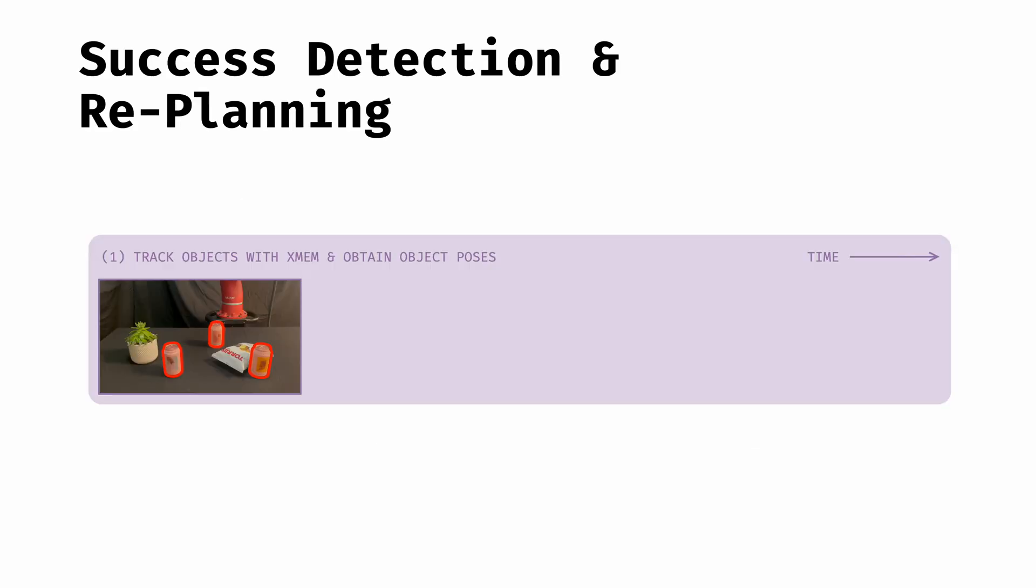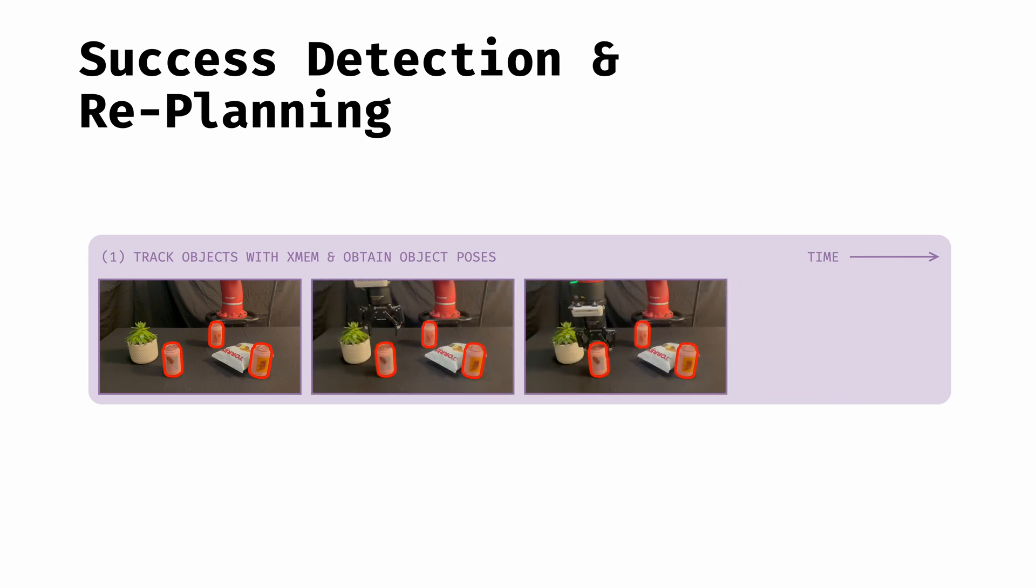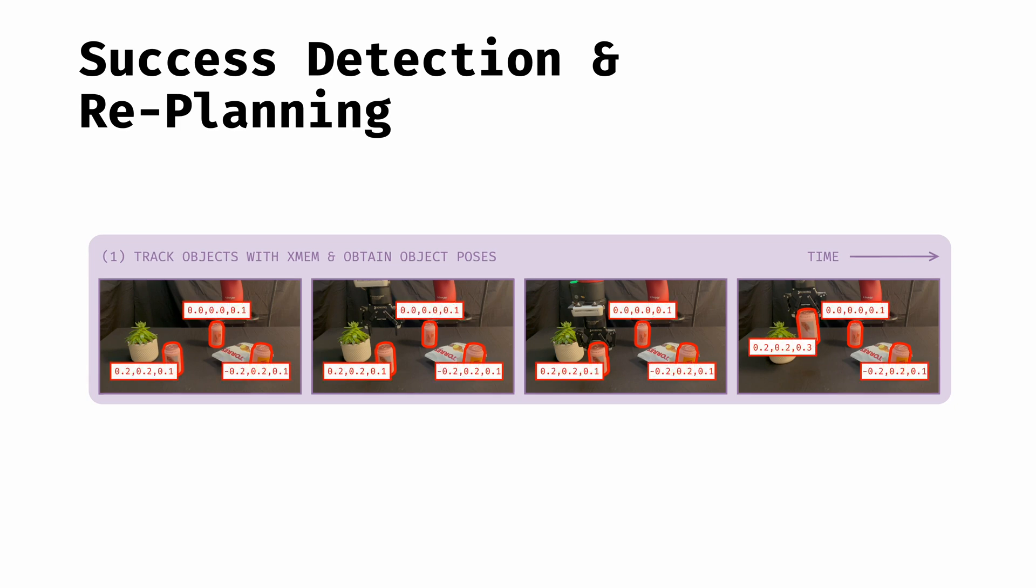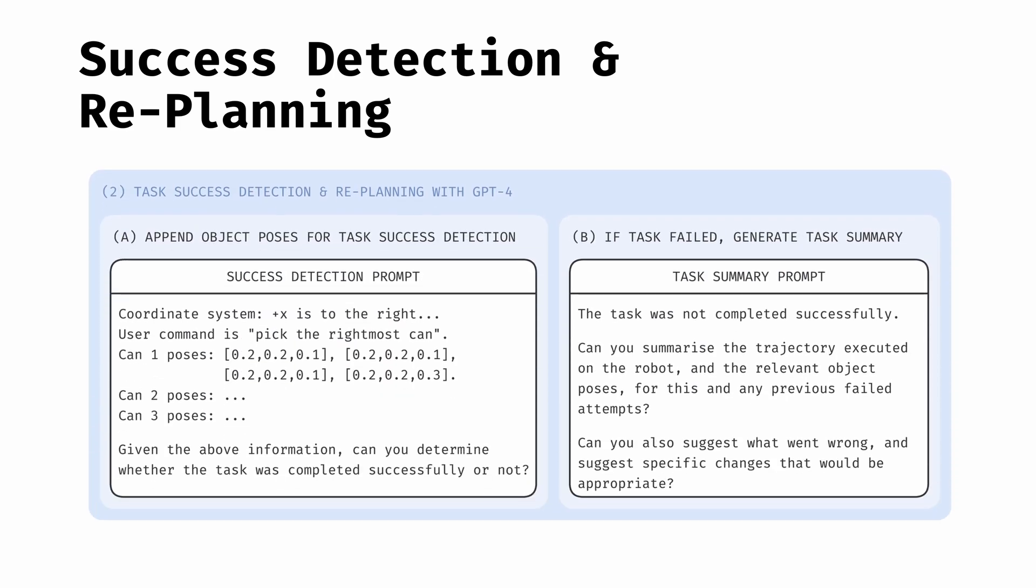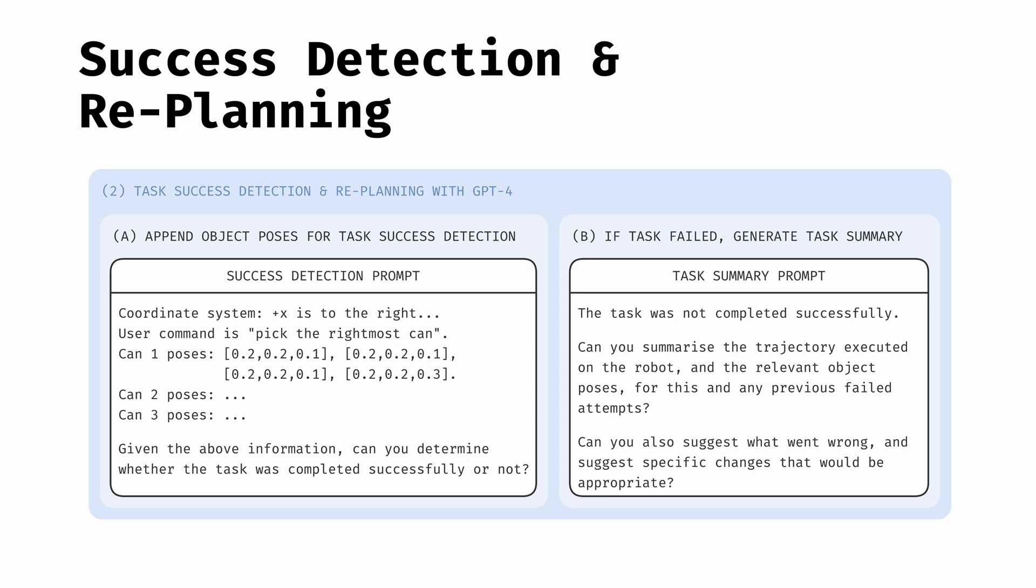We also investigate if LLMs can detect that a task has failed, and subsequently re-plan an alternative trajectory, by analyzing the numerical trajectories of objects recorded during task execution. First, the segmentation maps of the objects are tracked over the entire duration of the task execution. Then, the object poses are calculated using camera calibration for each frame of the task execution. These poses are provided as numerical values to the LLM as part of the success detection prompt.